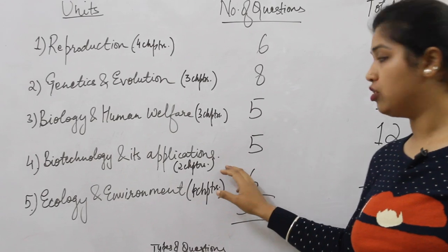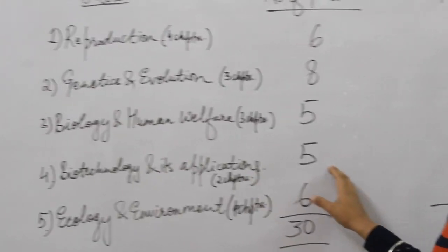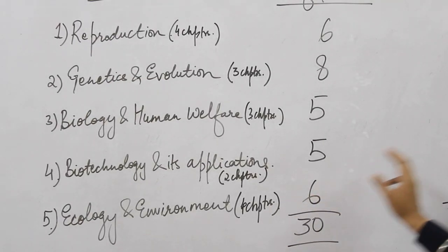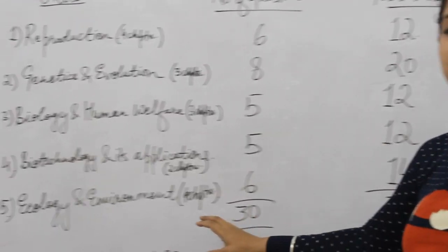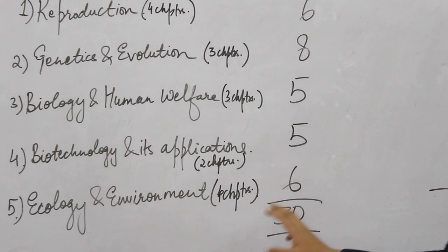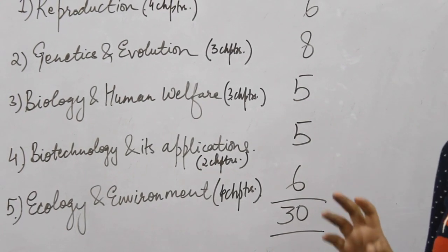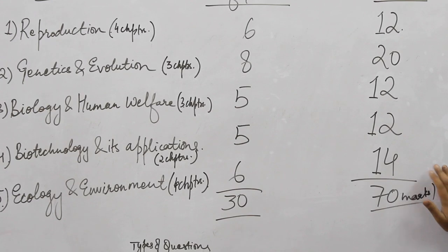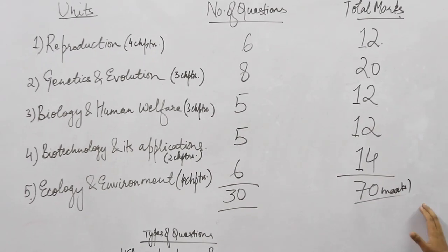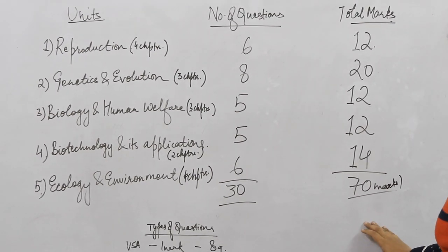Biotechnology and its application: five questions will be asked in total in the paper for 12 marks. Ecology and environment consists of four chapters. Six questions in total will be asked from this unit holding a weightage of 14 marks, which makes the total marks as 70 marks.